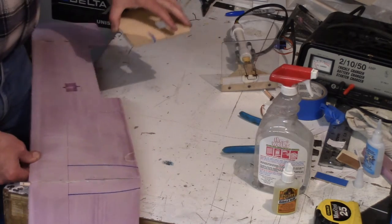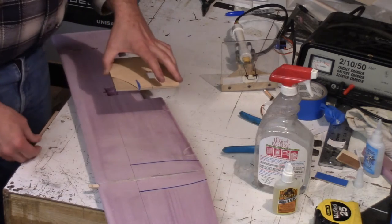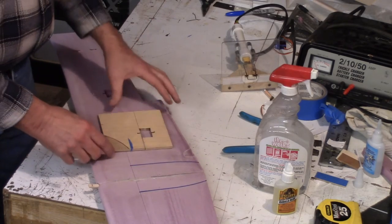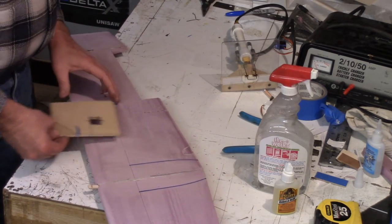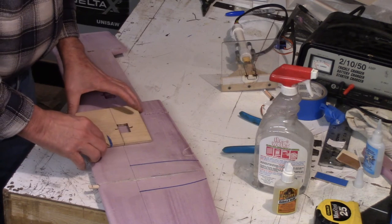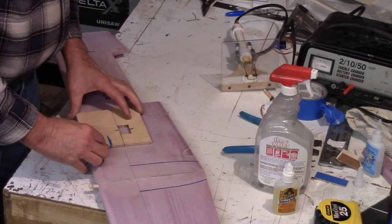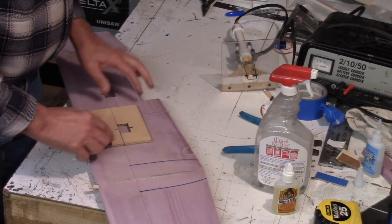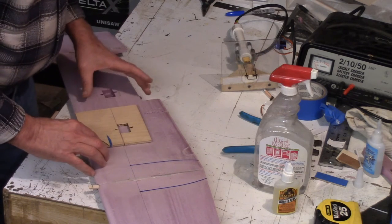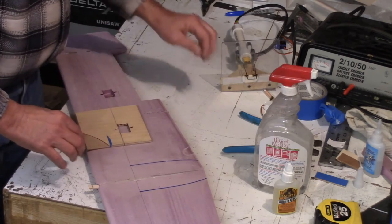So I have a layout line on the wing and what I'm going to do is position this template that I have made right over the layout line where I want my servo pocket to be. Once that's done I just have to secure it with some masking tape.